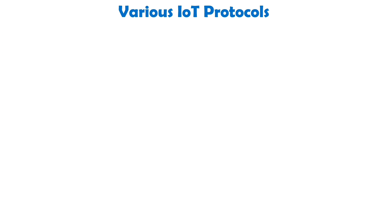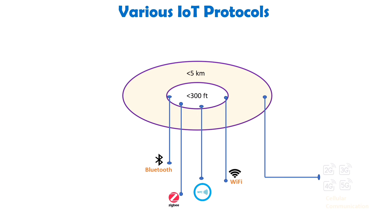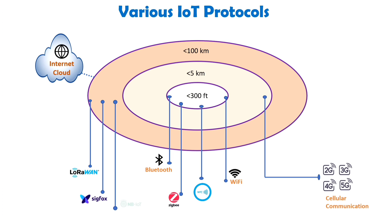The choice of protocol depends on the range of communication required. If the data needs to be transmitted within a distance of less than 300 feet, protocols such as Bluetooth, ZigBee, NFC, and Wi-Fi are available. For communication over longer distances up to 5 kilometers, cellular protocols like 2G, 3G, 4G, and 5G can be utilized. If the range needs to be extended further, up to approximately 100 kilometers, protocols such as LoRaWAN, Sigfox, and NB-IoT are designed for such scenarios. The selection of the appropriate protocol depends on the specific communication requirements and the desired range of transmission.